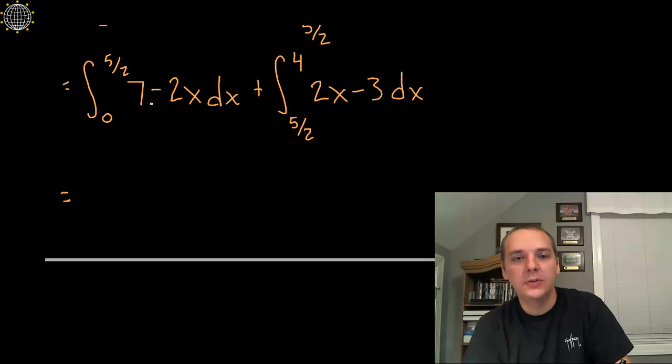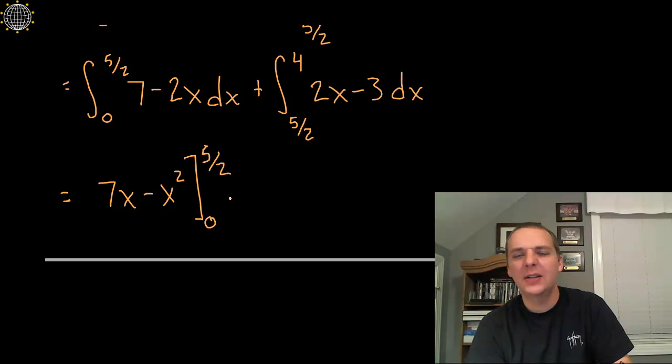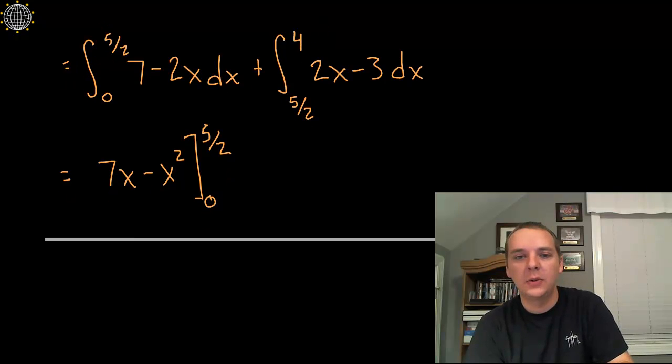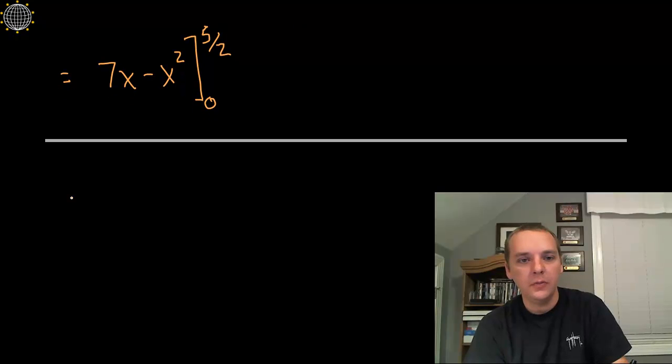Alright, the first one here we take 7x minus x squared, bracket from 0 to 5 halves. And just so things don't get overly cumbersome, I think I might just go ahead and finish this one out, and then we'll come back and do the other one in just a second. Alright, plug in 5 halves, so 7 times 5 halves would be 35 over 2, minus plug in 5 halves squared, that would be 25 over 4.